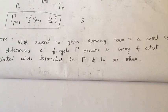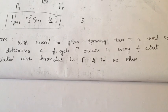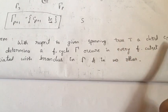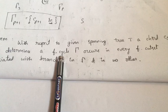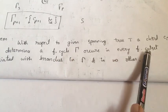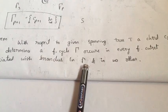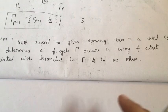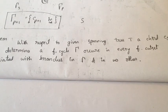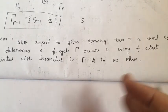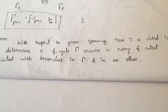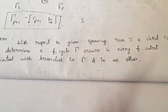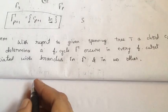Similar to this theorem, we can prove one more theorem: with respect to a given spanning tree, a chord CI that determines a fundamental cycle gamma occurs in every fundamental cut set associated with branches in gamma, and in no other fundamental cut set. Here, instead of a branch determining a cutset, we take a chord determining a fundamental cycle.